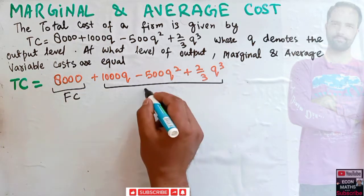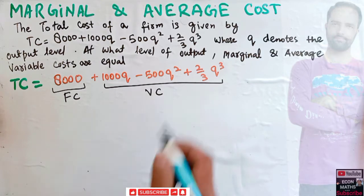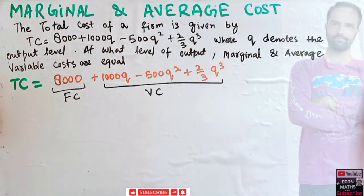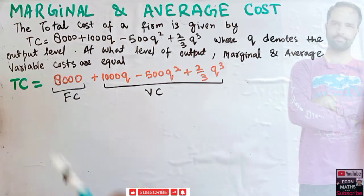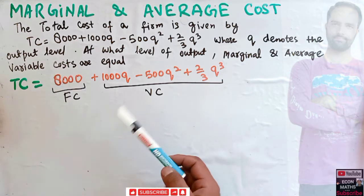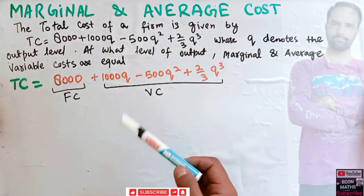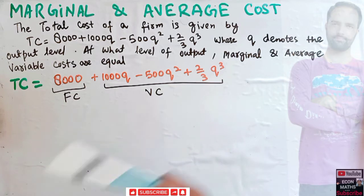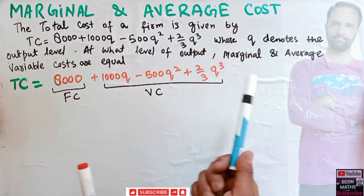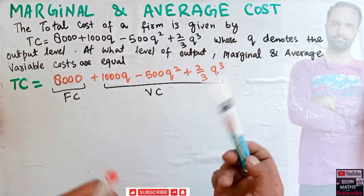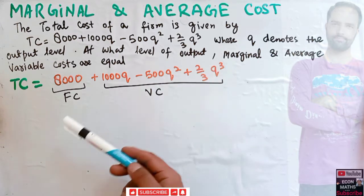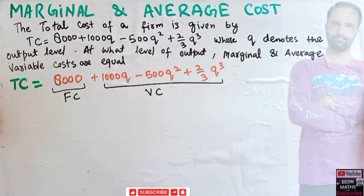Fixed cost is that cost which does not depend upon the level of output — since no Q is involved in it. Variable cost is that cost which changes with the level of output; producing more increases it, producing less decreases it.